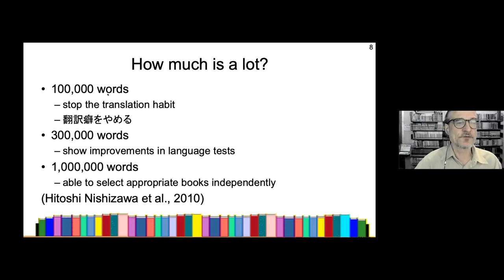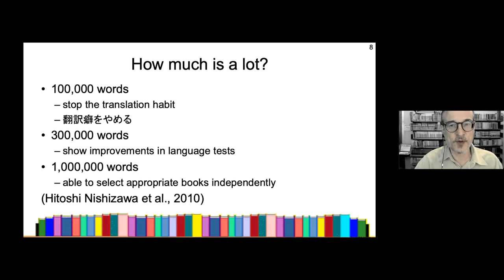100,000 words is a reasonable target for one semester in a university course, and 300,000 is a reasonable amount to read in one year. This may seem like a lot, but it's not impossible. The most important thing we need for extensive reading is books.